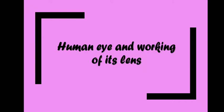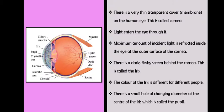There is a very thin transparent cover on the human eye. As you can see in the diagram, this thin layer is called the cornea.